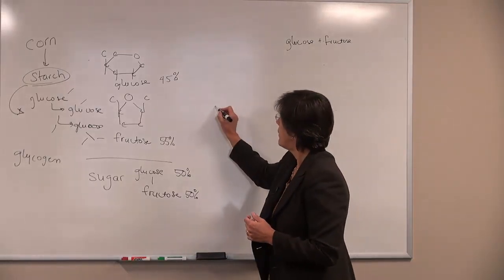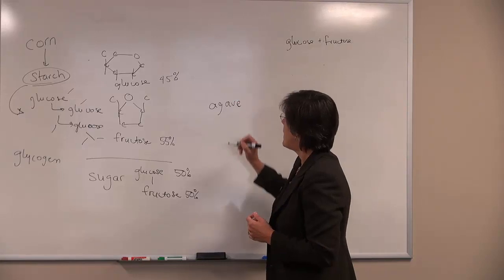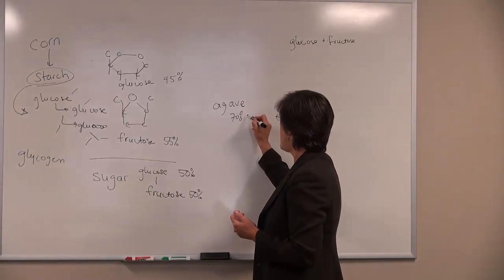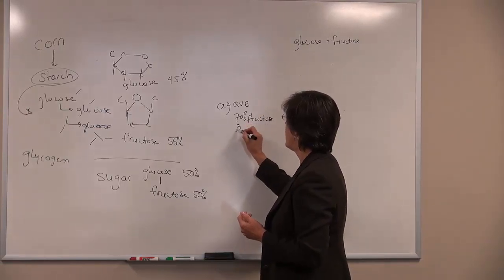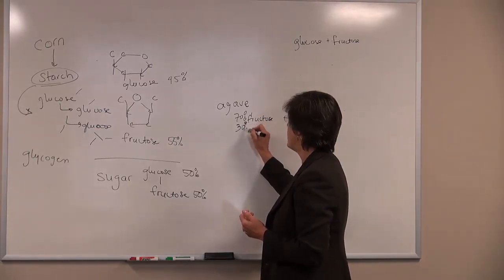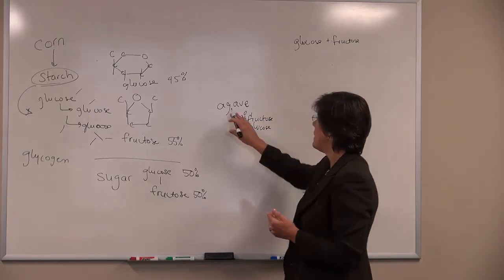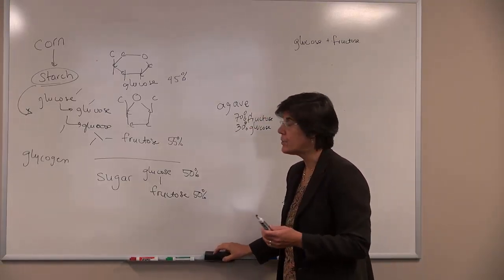Something like agave syrup, which is popular right now, has actually more like 70 percent fructose and 30 percent glucose. So it's higher in fructose than is high fructose corn syrup because it comes from a plant source and that's where a lot of fructose is found in nature.